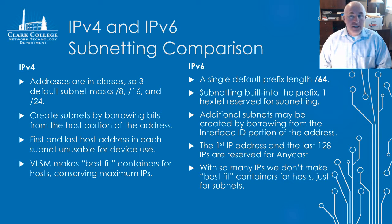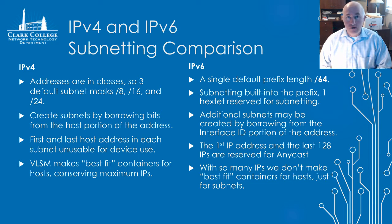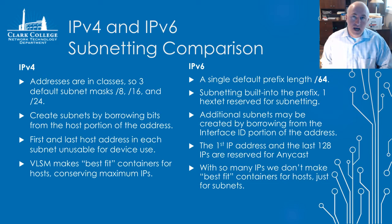The first IP address in every subnet and the last 128 IP addresses are all reserved for anycast, so they can't be used to assign to hosts. With so many IPs in IPv6, we don't make best-fit containers for our hosts — we simply make them for the subnets. If you needed three subnets, we would make a best-fit container for that and wouldn't look at the number of hosts per subnet, because each subnet would be a slash 64, so 2 to the 64 hosts is an incomprehensibly large number of host addresses.